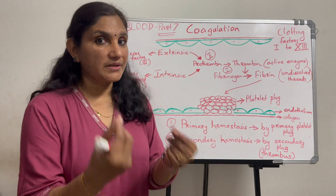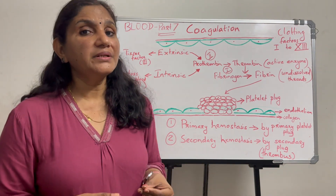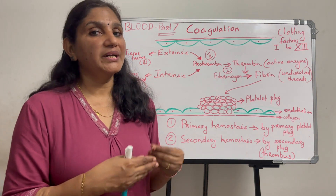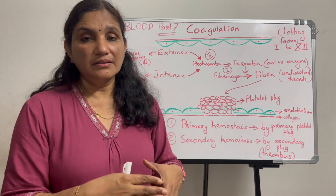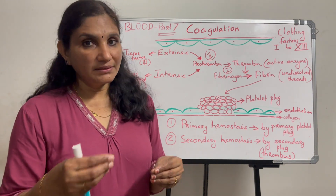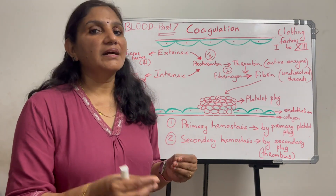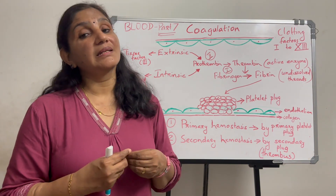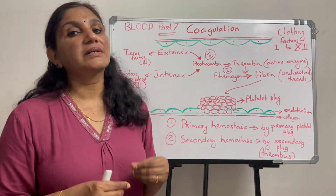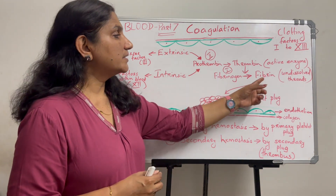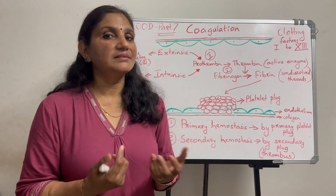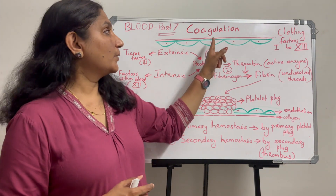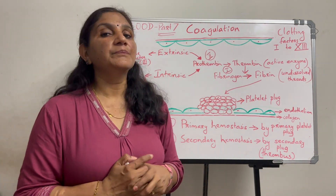What are fibrin threads? We use the process of coagulation. The primary hemostasis forms a temporary platelet plug — it is just a temporary seal of the endothelial gap. To make it permanent and stable, we use fibrin threads. Fibrin threads are produced through the process of coagulation. There are two key proteins in blood plasma involved: prothrombin and fibrinogen.